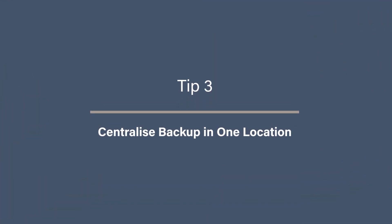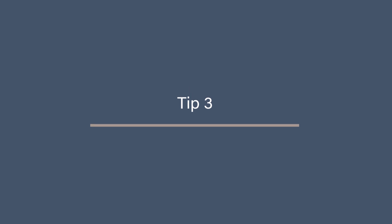Tip 3: Centralize backup in one location. With photos spread across multiple devices, it's important to have a centralized backup strategy. Choose one cloud service or external hard drive to be your main backup location. For example, you could use Google Drive, OneDrive, or Dropbox as your primary cloud backup, while also backing up to a physical drive like a Western Digital My Passport. By centralizing your backup, you will avoid having multiple copies of the same photos scattered around, and it reduces the risk of losing your photos due to device failure or data corruption. Remember, having one primary location ensures your backups are reliable and easy to access when needed.